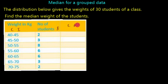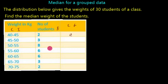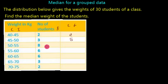The cumulative frequency of the given data is calculated as follows. The number of students whose weight is between 40 to 45 is 2. The number of students whose weight lies between 40 to 50 kg is 2 plus 3, which is 5. The number of students between 40 to 55 is 8 plus 5, which is 13.